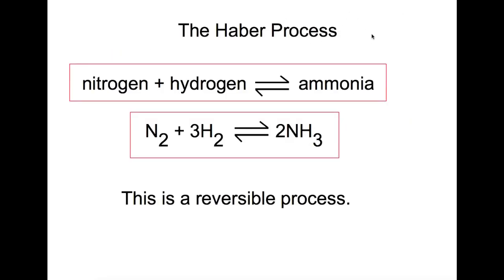Ammonia is produced during the Haber process. During the Haber process, nitrogen and hydrogen are combined to produce ammonia. You can see here the word and balanced equation. This process is reversible and therefore has a double-headed arrow. This means that at the same time as the nitrogen and hydrogen combining to create ammonia, the ammonia is also breaking up to form nitrogen and hydrogen.